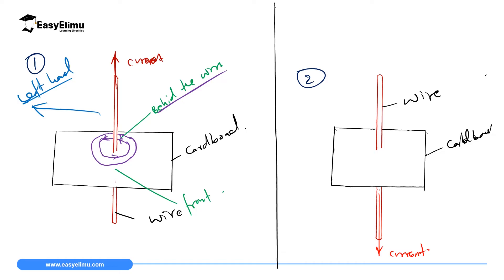Above the wire, behind the wire, the field is moving to the right. Then we draw a third field line: behind the wire is moving to the left, and in front is moving to the right. So we have now drawn the magnetic field lines along that wire.